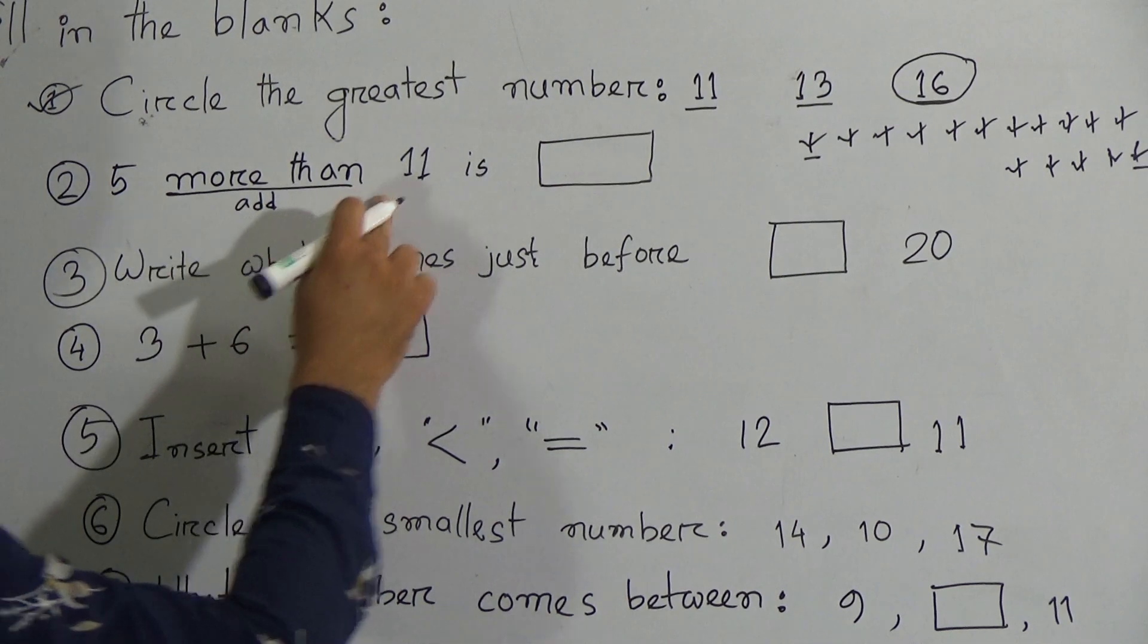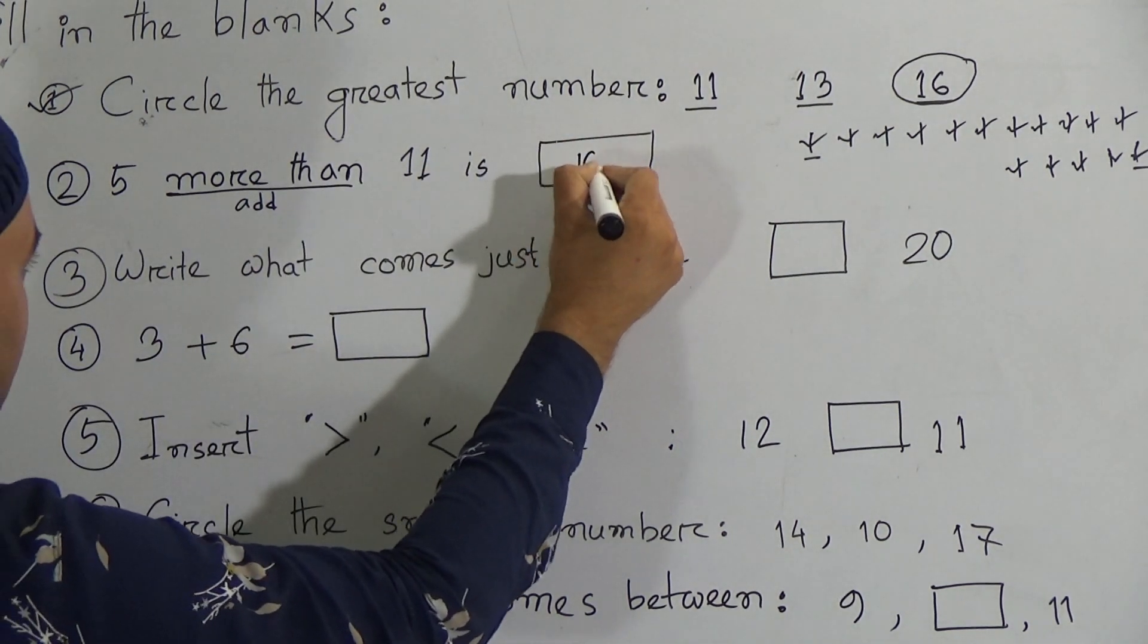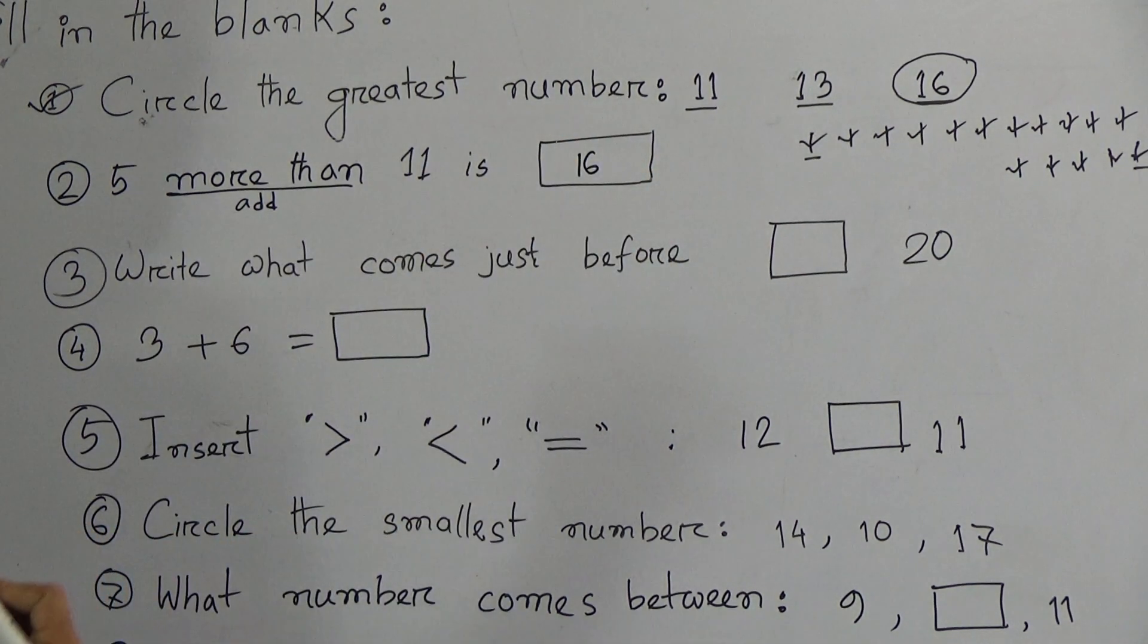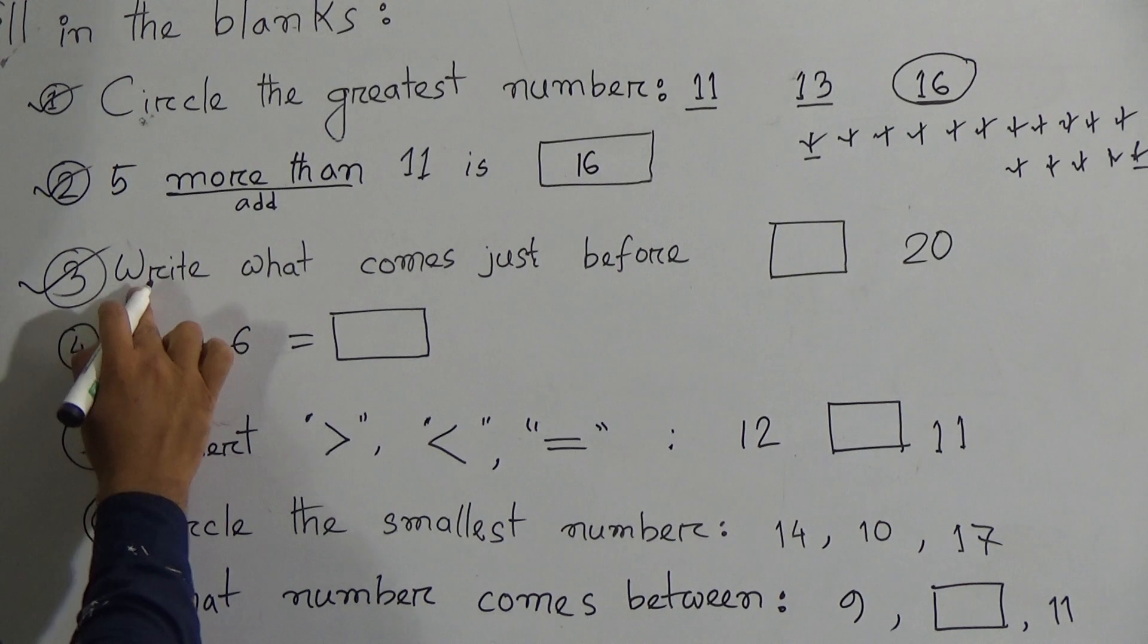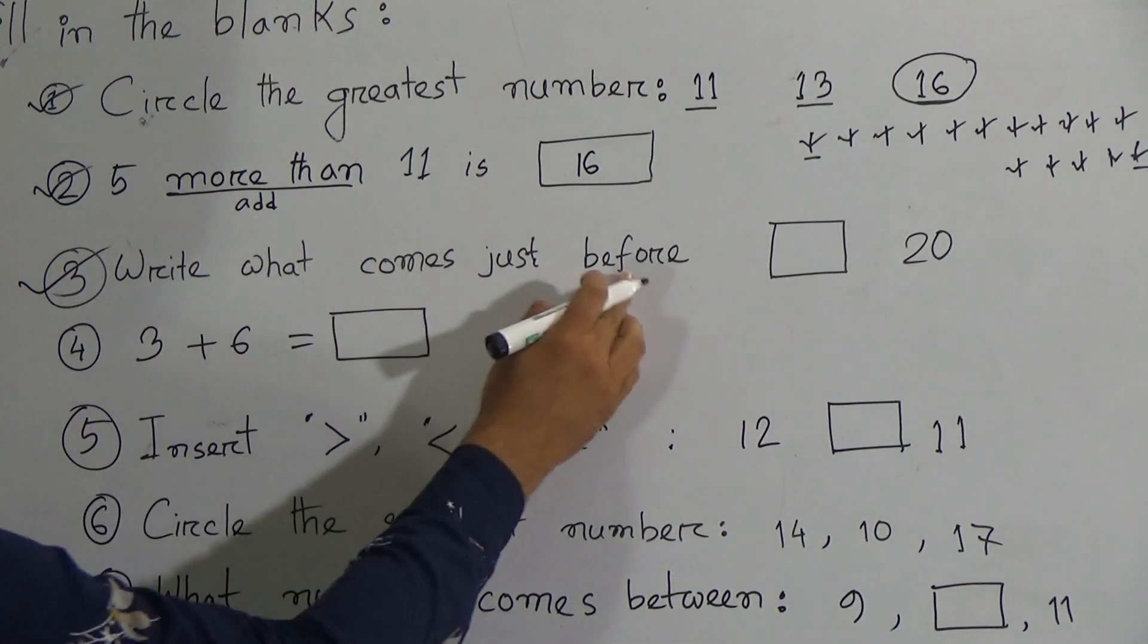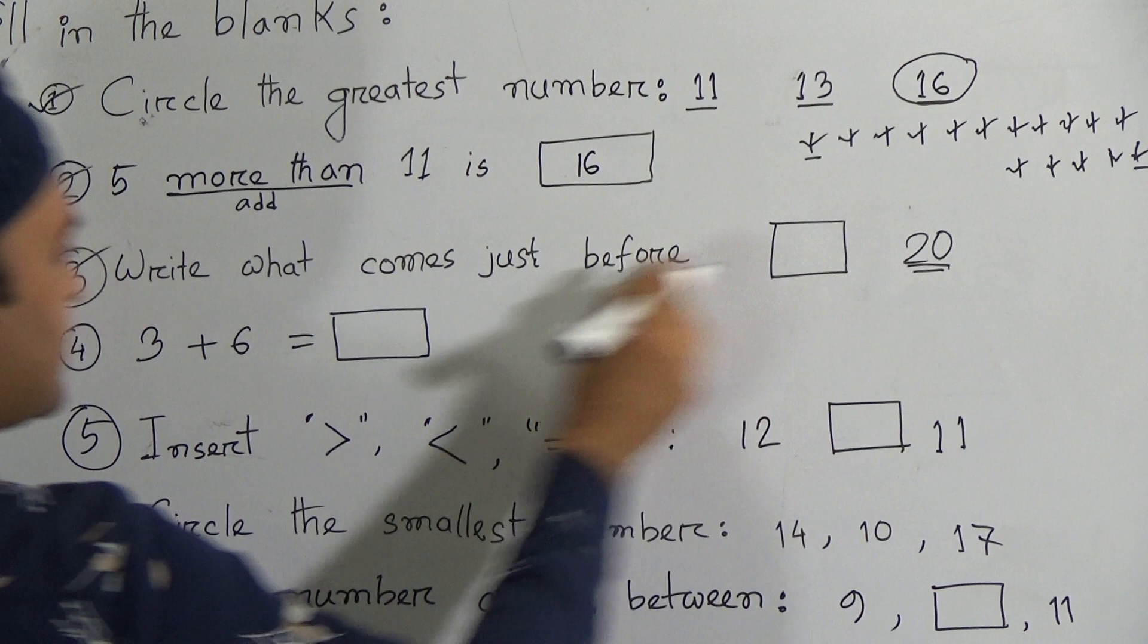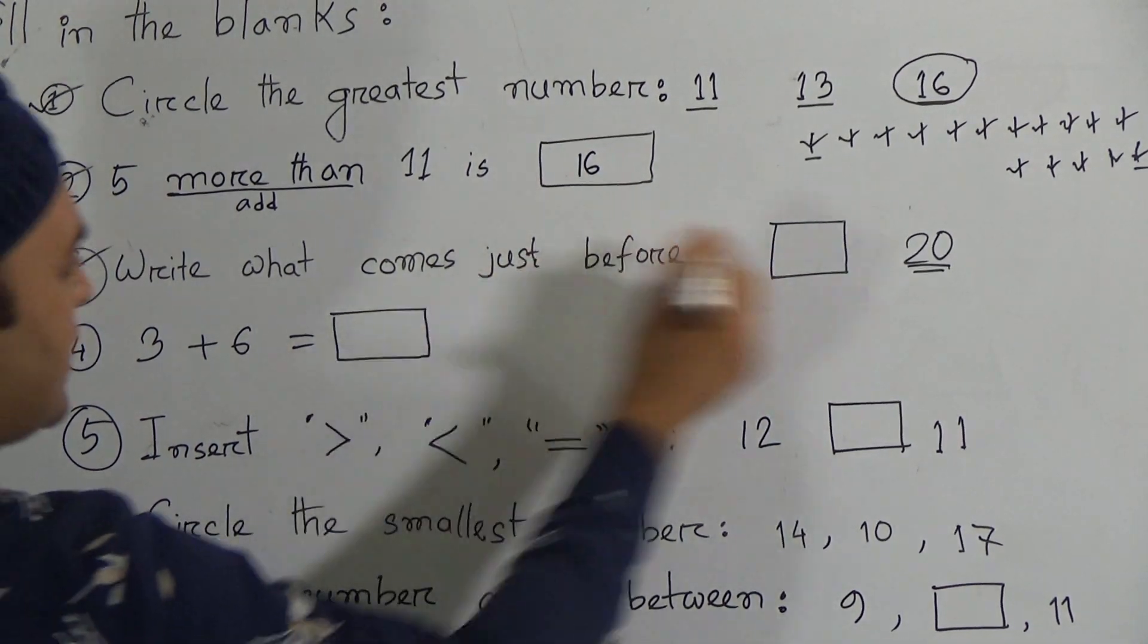That means there are sixteen sticks. So five more than eleven is sixteen. Have you understood this one? Hope, my dear students, you understood this one. Now go to next one. Write what comes just before twenty. Can you say just before twenty what number comes?